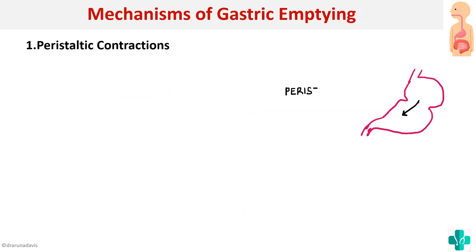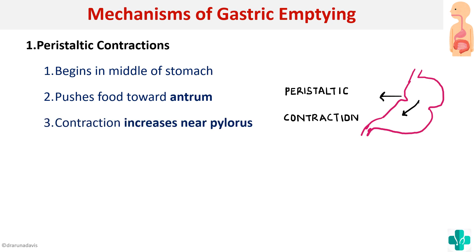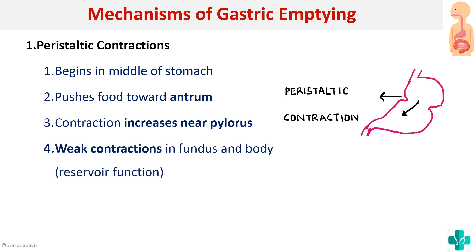In summary, peristaltic contractions begin in the middle of the stomach and push food toward the antrum, with contraction increasing near the pylorus. There are weak contractions in the fundus and body because the muscle layers there are thin. This is important because it prevents reflux — we don't want food going back into the esophagus — and it also allows the fundus and body to act as a reservoir, accommodating varying meal sizes.